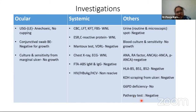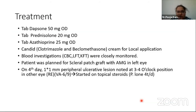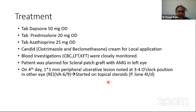Pathology tests advised by dermatology also came back negative. Treatment was started: dermatology started dapsone 50 mg once daily and prednisolone 20 mg once daily. Rheumatology suspected a vasculitis sequela and added azathioprine 25 mg once daily. Candid cream was prescribed for local application and blood investigations were closely monitored given the immunosuppressant use. For the eye, we performed a scleral patch graft with amniotic membrane graft in the left eye.